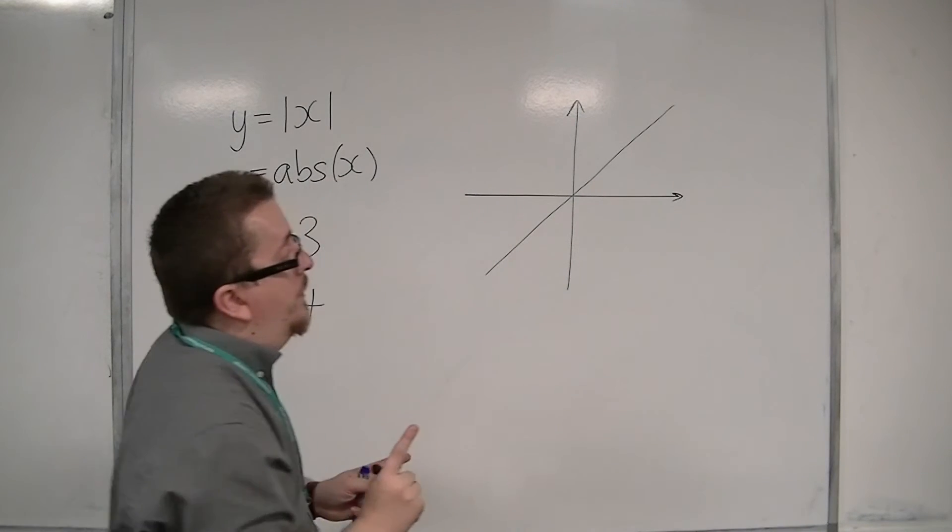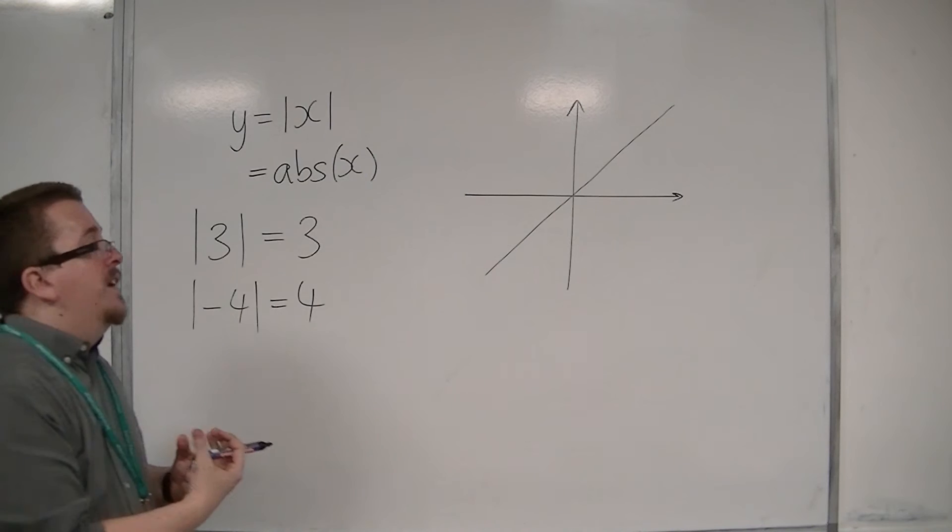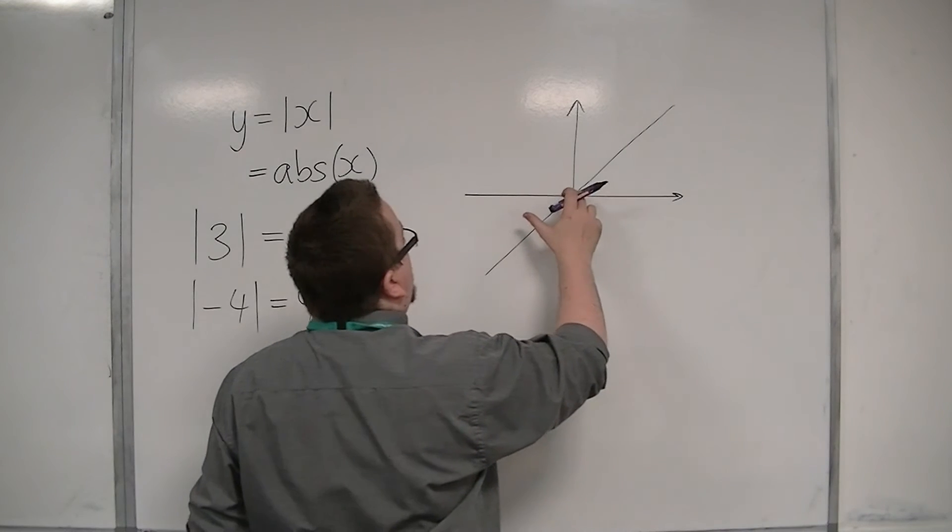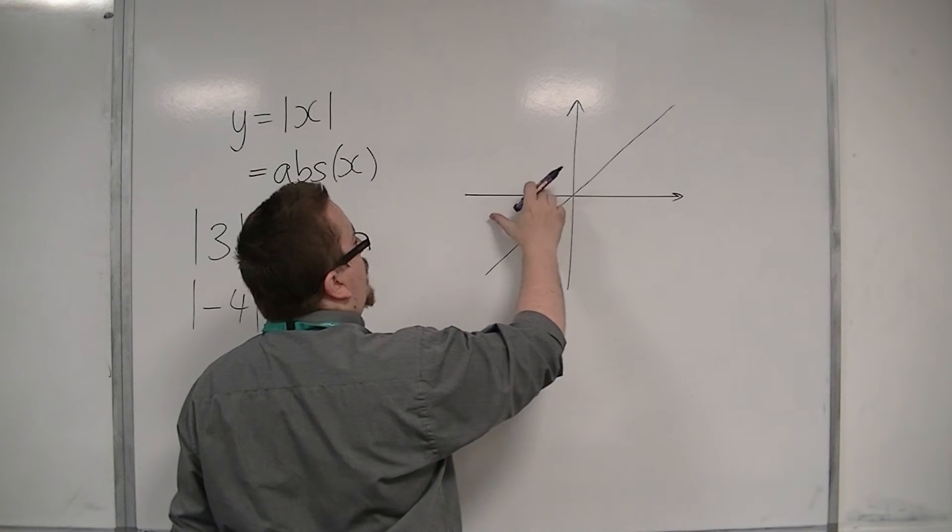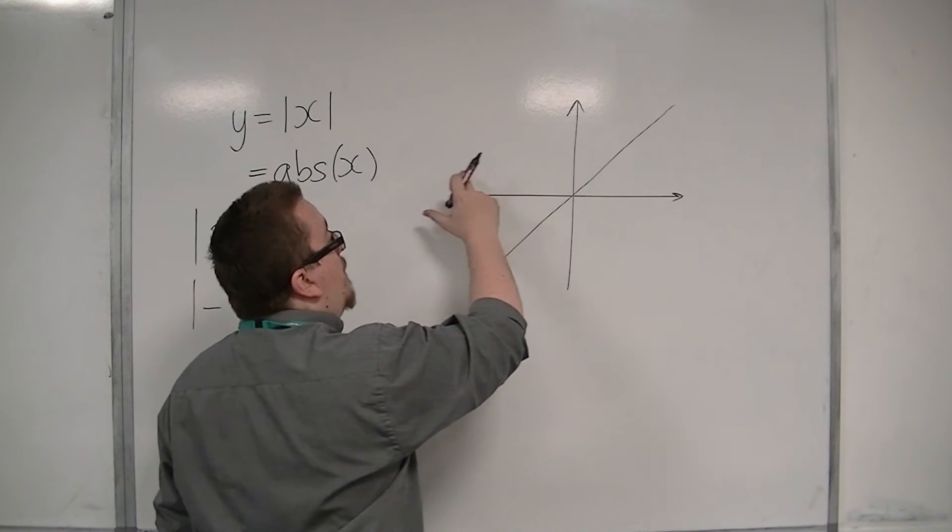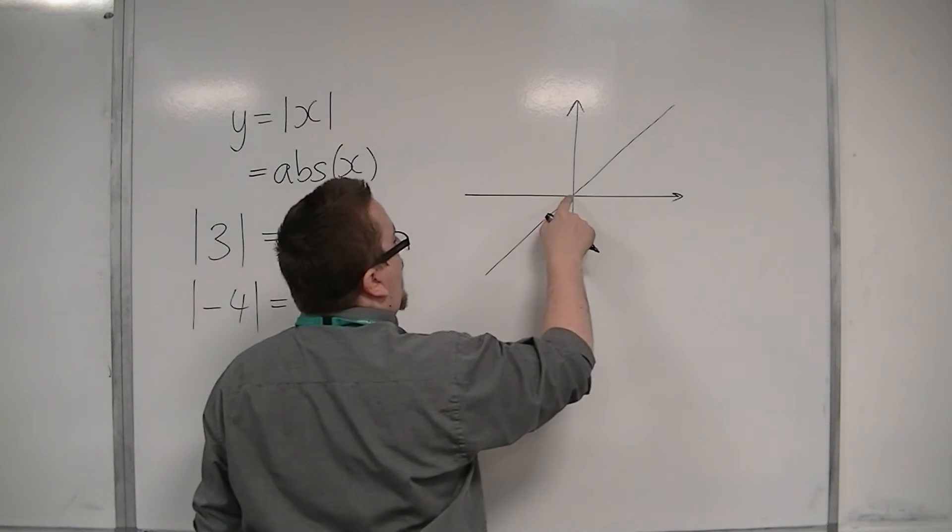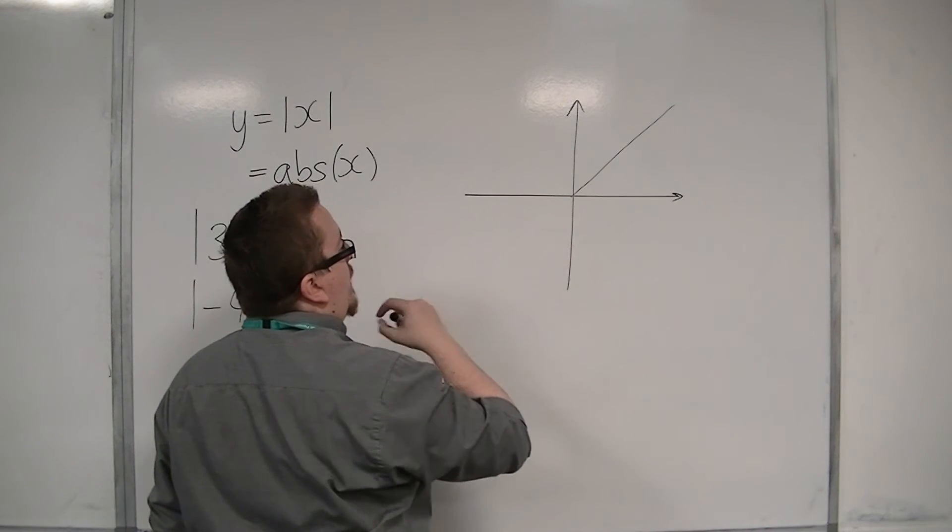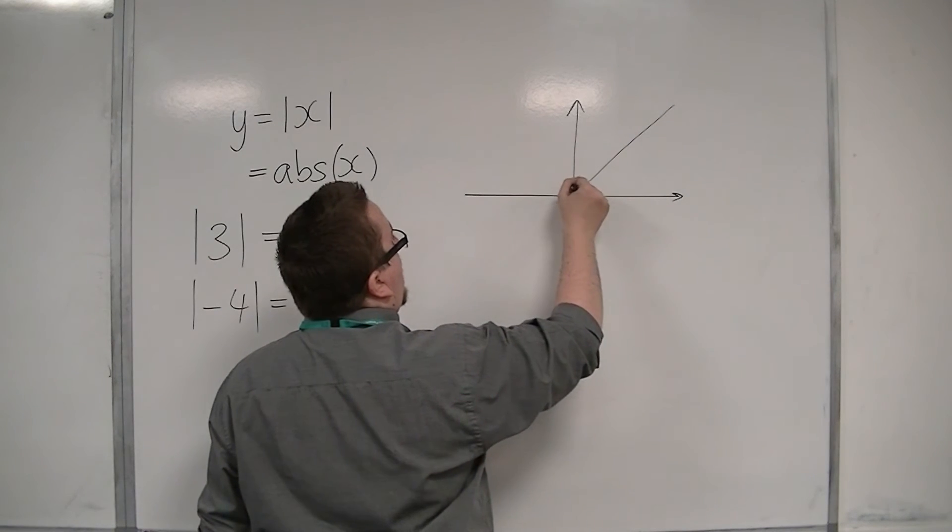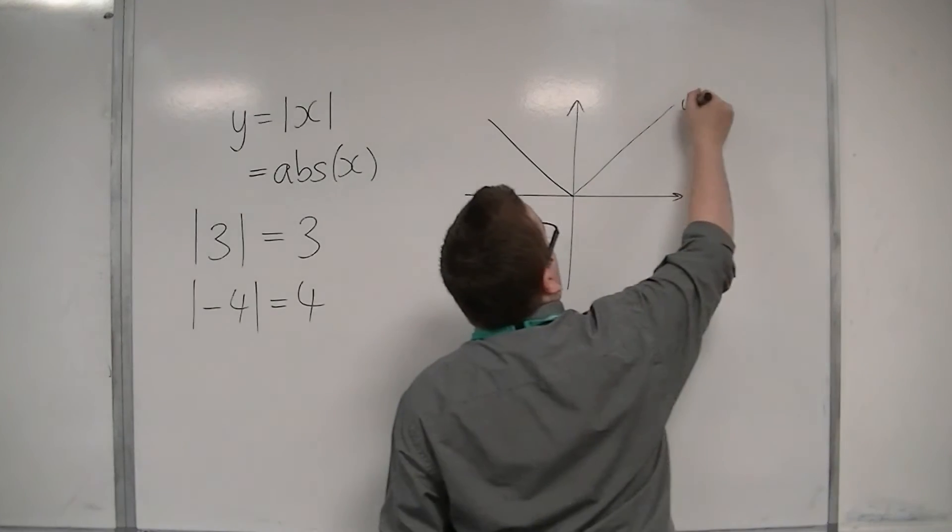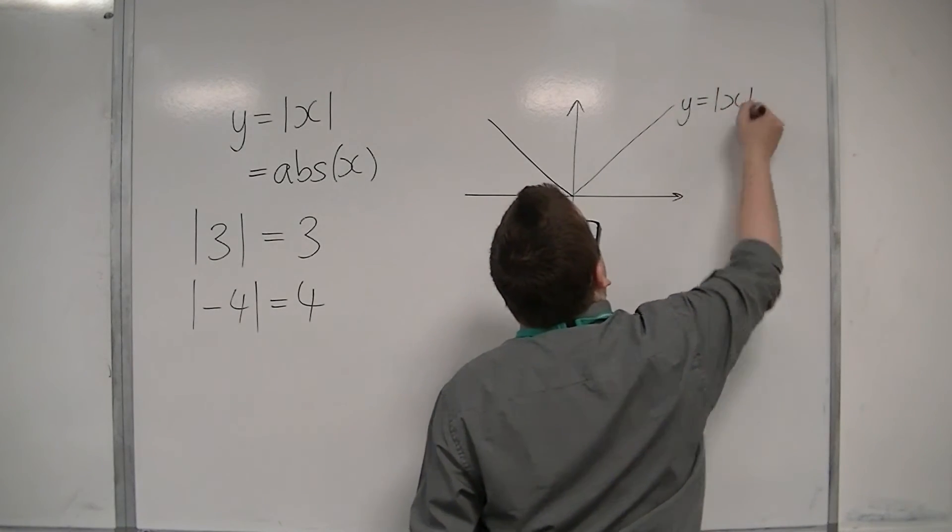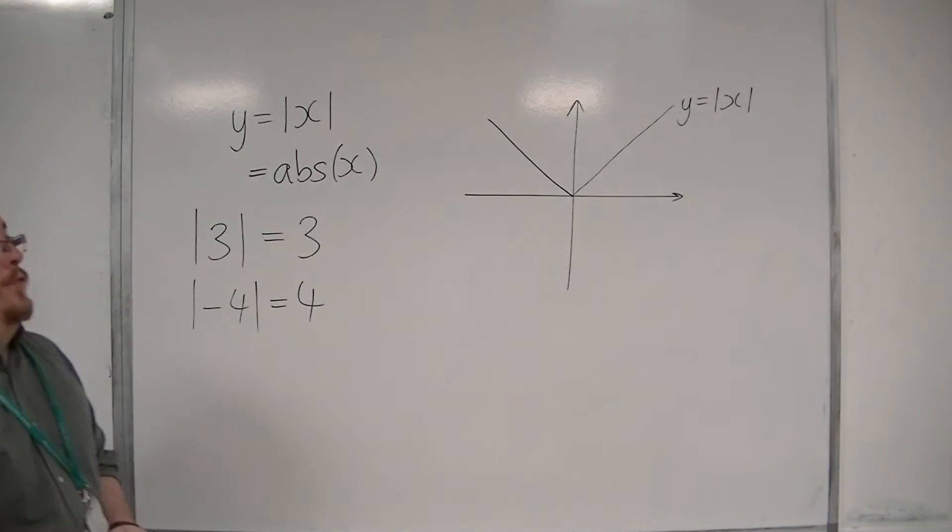But what happens when x becomes negative is that you would get mod of minus 1 is 1, mod of minus 2 is 2, and mod of minus 10 is 10. So actually, the graph doesn't look like that below the x-axis. It looks like this. This is a sketch of y equals mod x, and it has this V shape.